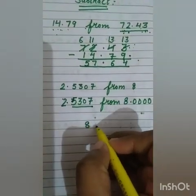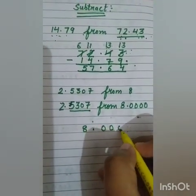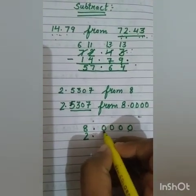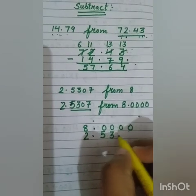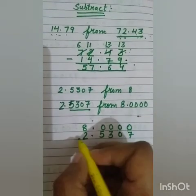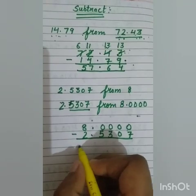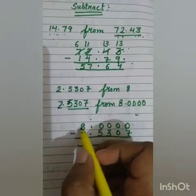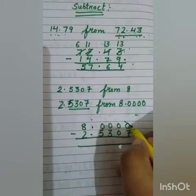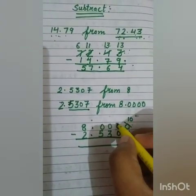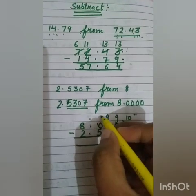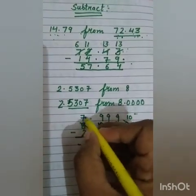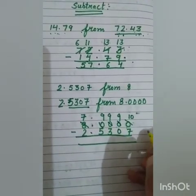Write 8.0000 on top and 2.5307 below for subtraction. Whenever there are too many zeros, there is a shortcut method. You write 10 in the first place and 9 in all the other places, and subtract 1 from the last digit. This is a shortcut method to do the subtraction.